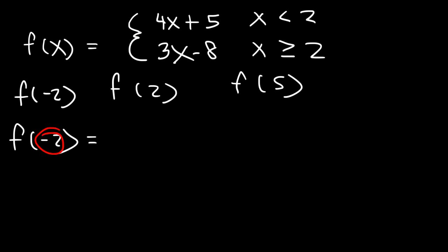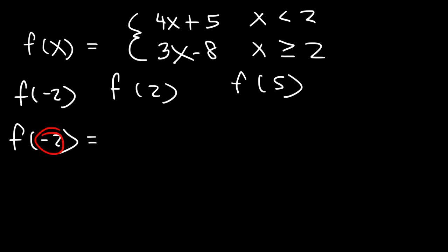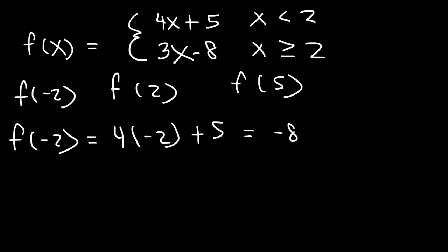Negative 2 is less than positive 2 — it's not equal to or greater than positive 2. So negative 2 corresponds to the first range, and we need to use the first part of the piecewise function. Replacing x with negative 2: 4 times negative 2 is negative 8, and negative 8 plus 5 is negative 3. So f of negative 2 is negative 3.